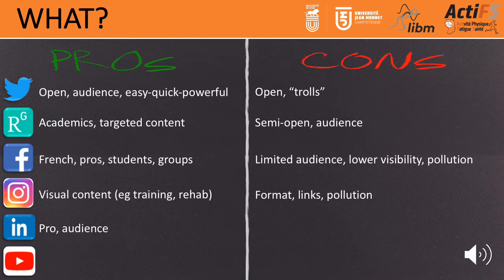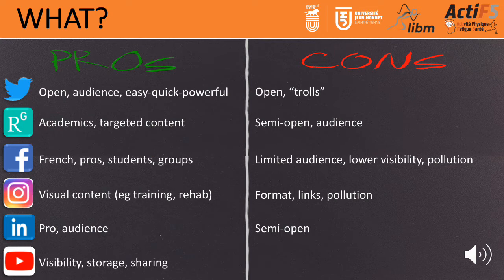LinkedIn is the number one professional network. The audience is very interesting because everybody is on LinkedIn for professional reasons. The main disadvantage is it's not fully open. When we publish a paper, I tend to communicate about it on all social media, especially LinkedIn. Finally, YouTube is a very visible platform — it's a good way to store video content and go back to previous files, and it's easy to share content because from YouTube you can push links and link to videos easily in a tweet or on Facebook.